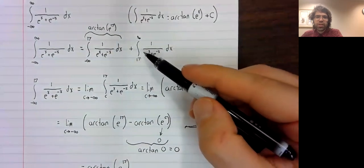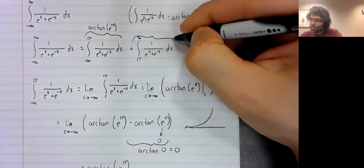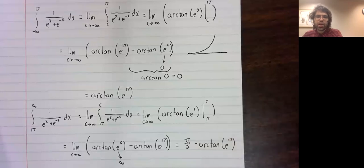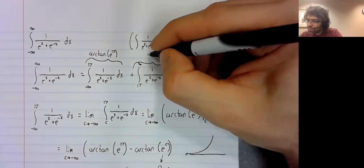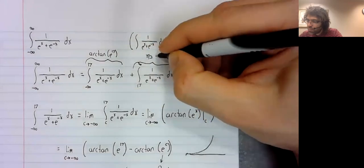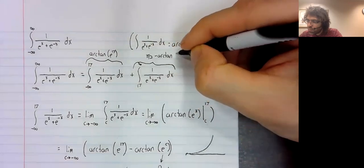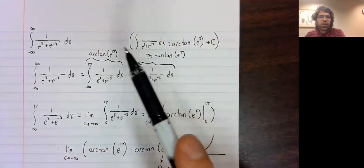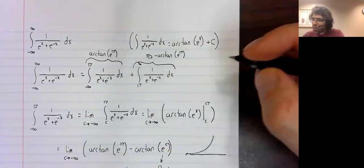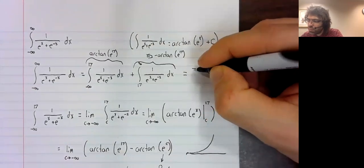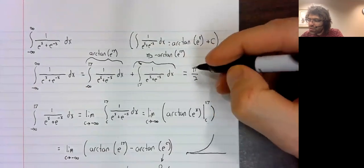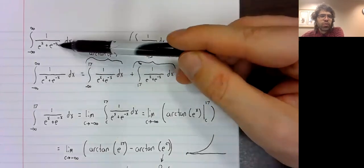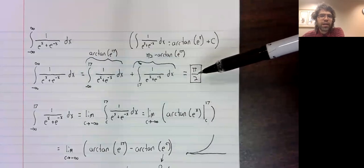And we found that this integral was pi over two minus that arc tangent. When we add these together, of course, this arc tangent and this negative arc tangent cancel. And we get pi over two. So this integral converges and equals pi over two.